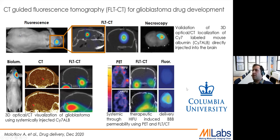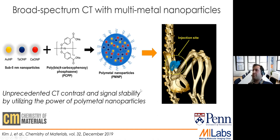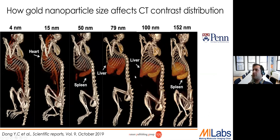There are several other applications with CT. This example is from the University of Pennsylvania, where they broadened the application of CT by using three different elements — gold, tantalum, and cerium — to make a polymetallic nanoparticle. This allows high contrast regardless of what X-ray energy is used during CT imaging. This paper was published in Chemistry of Materials. From the same group, they also did a study on the effect of gold nanoparticle size on enhancement of contrast within different tissues, published in Scientific Reports in 2019.